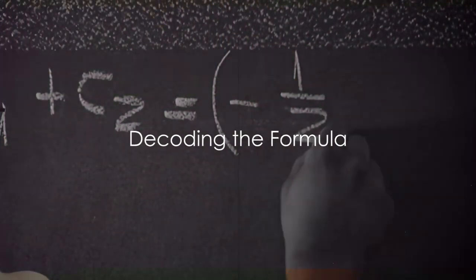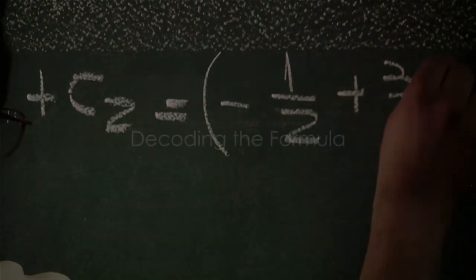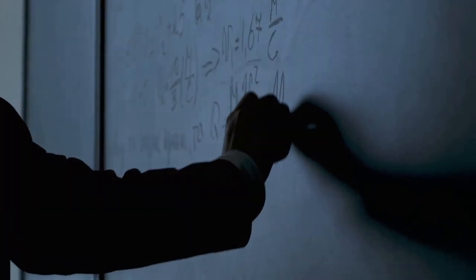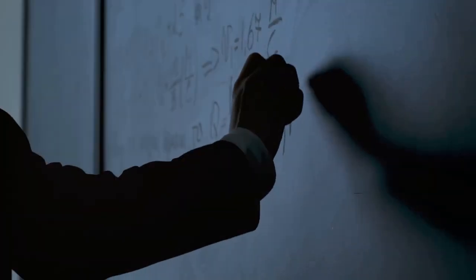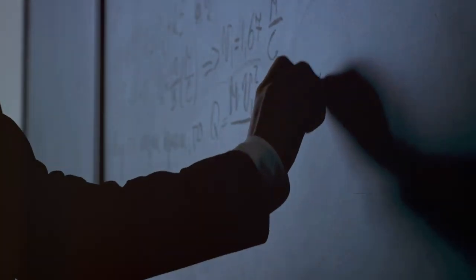The formula, expressed as S equals Kc cubed divided by 4G H-bar times A, might seem like a cryptic string of symbols, but each symbol carries a profound meaning.